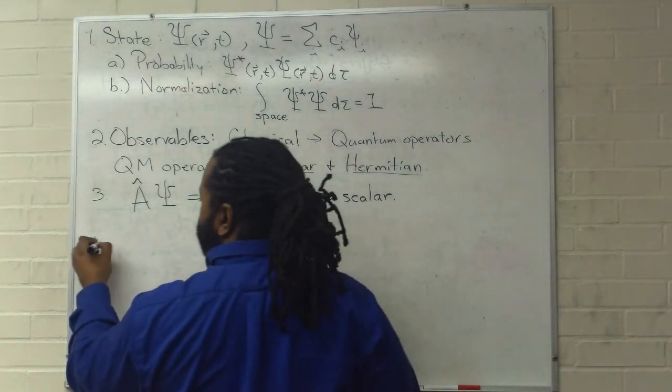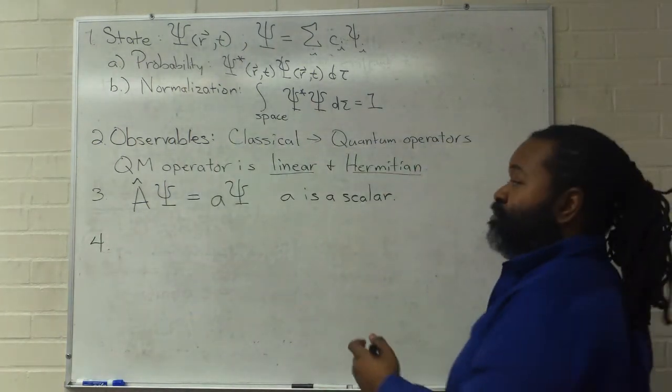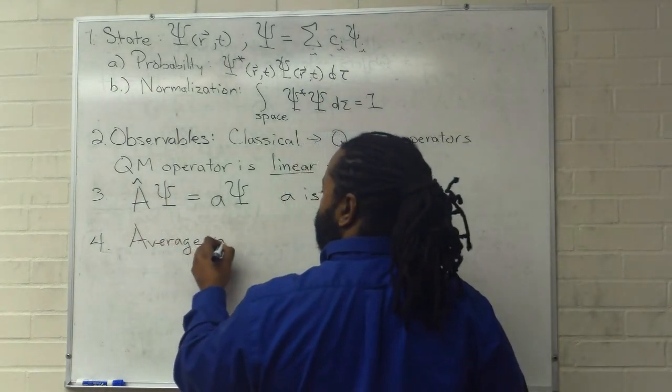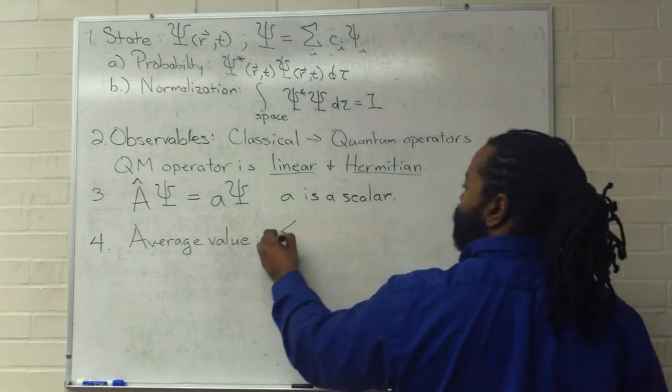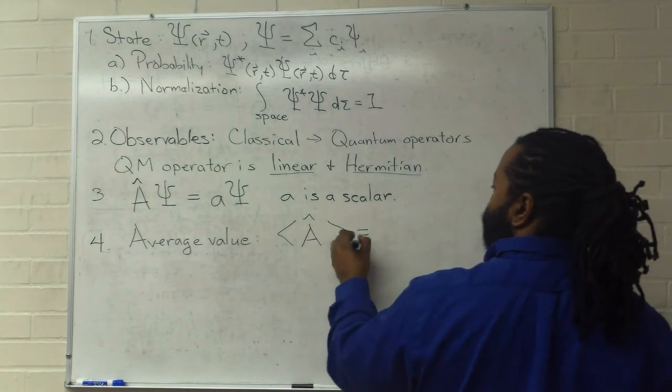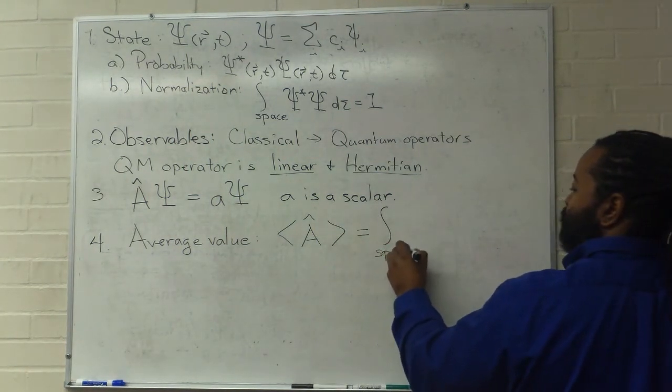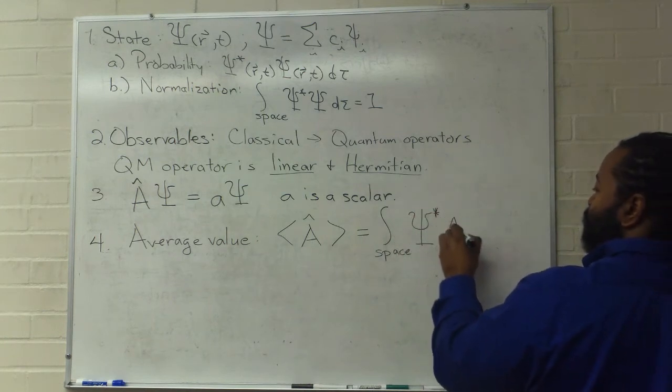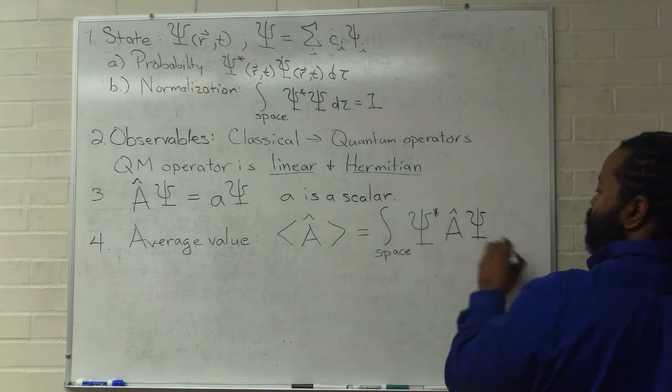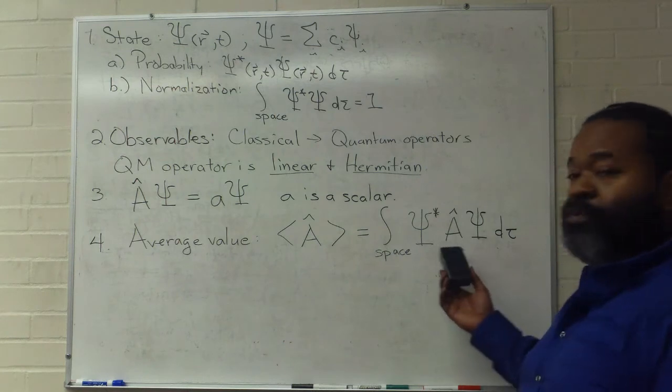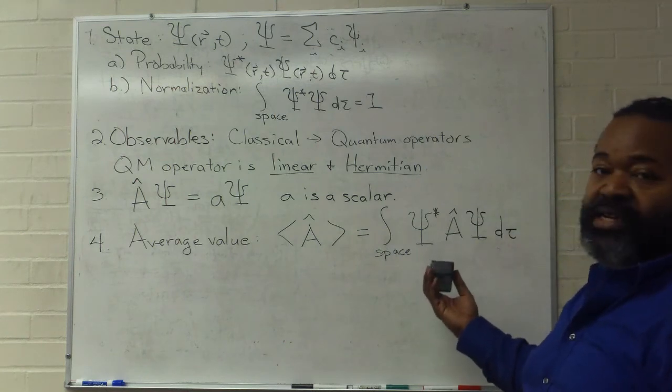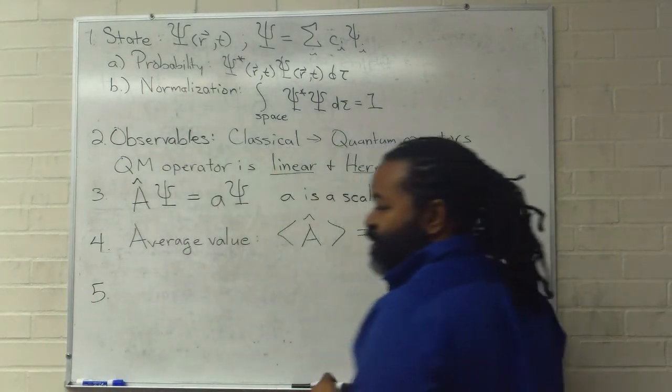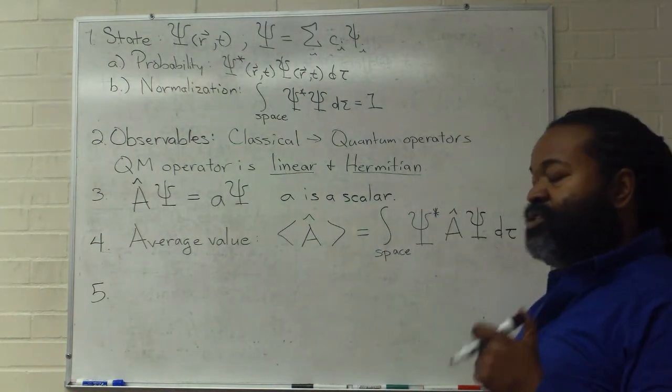The fourth postulate tells us how to determine the average value of an operator. The average value of an operator requires us to take an integral over all space, and we're going to need the complex conjugate of the function, the operator itself, and the function. By doing this, we can find an average value, sometimes referred to as an expectation value. And the final postulate that we need gives us the time dependent Schrödinger equation.